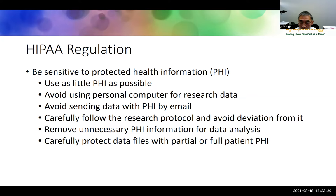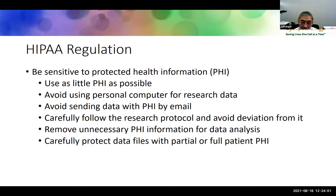Whatever is listed in your research protocol and data collection sheets should be carefully followed. You should not deviate from what you wrote in your protocol. If any deviation occurs, make the IRB-approved change before taking the action. Always remove any unnecessary PHI from your data sheet, and carefully protect all partial or fully patient-protected information during your research. Case numbers — surgical case numbers, cytology case numbers — are considered traceable to the patient, so all patient case numbers and medical record numbers should be carefully stored.